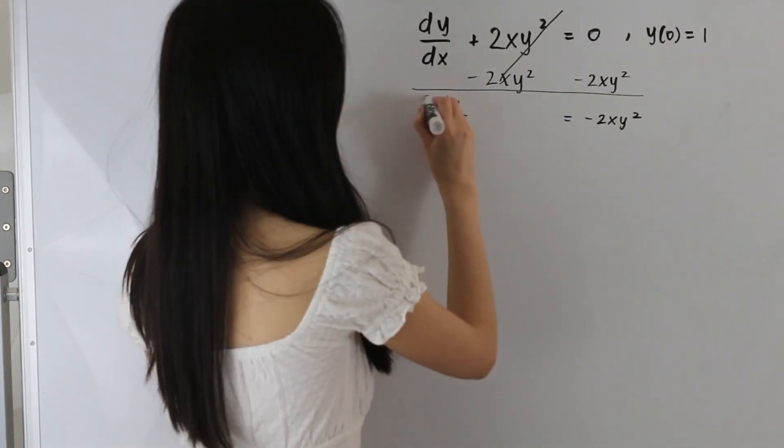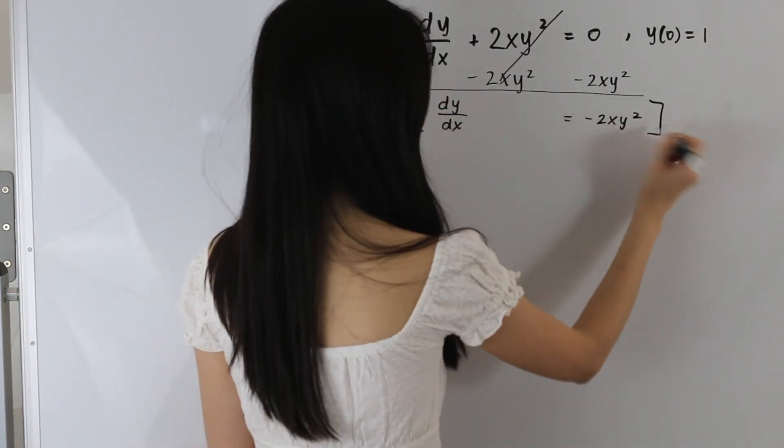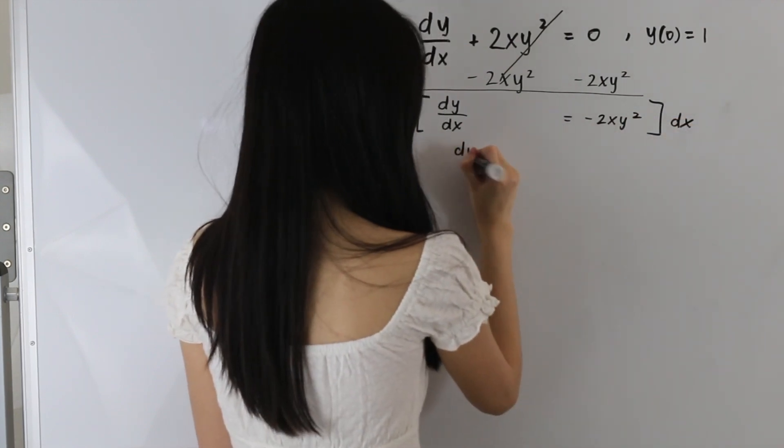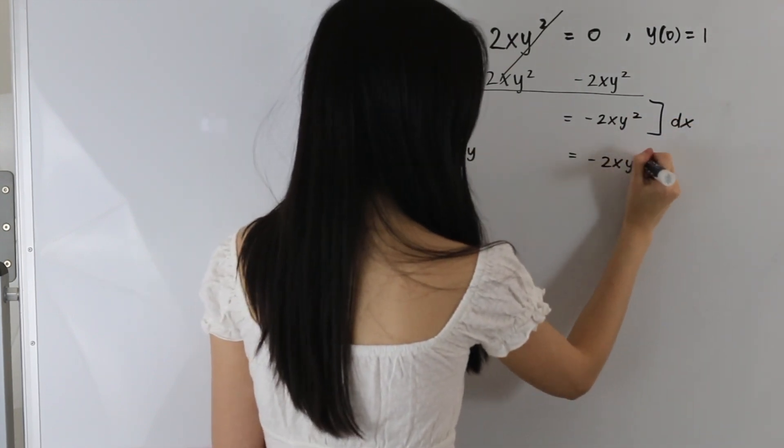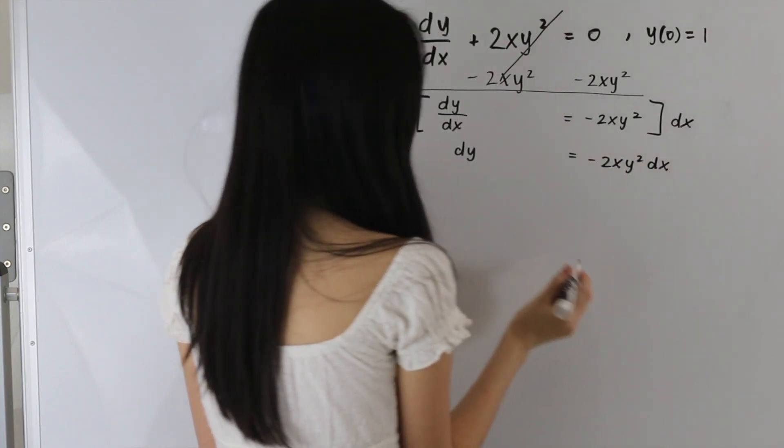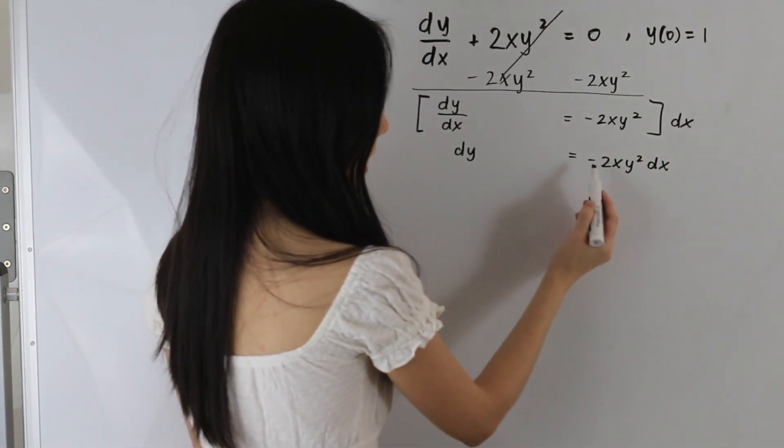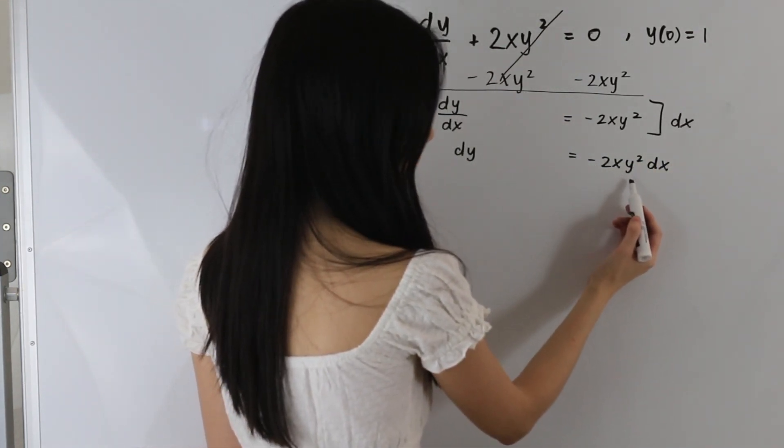let's go ahead and multiply our entire equation by dx. So we end up with dy is equal to negative 2xy squared dx.